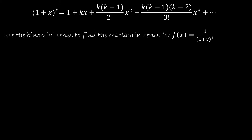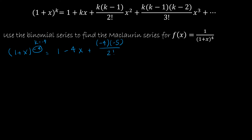Let's do another example. Same idea — we're going to use the binomial series to find the Maclaurin series, meaning centered at 0, for f(x) equals 1 over (1 plus x) to the 4th. I'm going to write this as 1 plus x to the negative 4th, and use my pattern to find the first couple of values. Keeping in mind that k is negative 4: the first term is 1, the second is negative 4x, then negative 4 times negative 5 over 2 factorial times x squared, and then negative 4 times negative 5 times negative 6 over 3 factorial times x cubed, and so on.